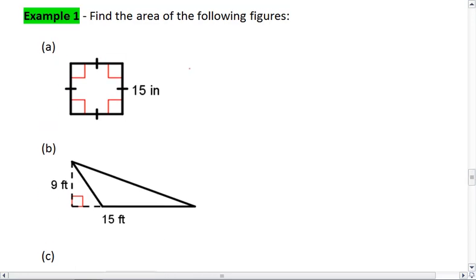Okay, here's your solutions. For A, we have a square. The area is going to be the side squared, which in this case is 15 squared. 15 squared is 225, so our area is 225 inches squared.